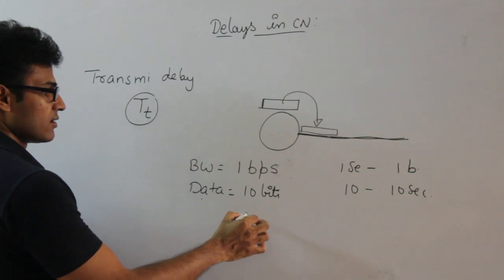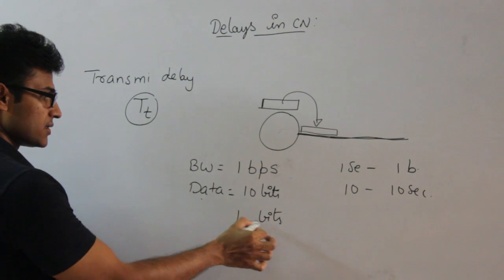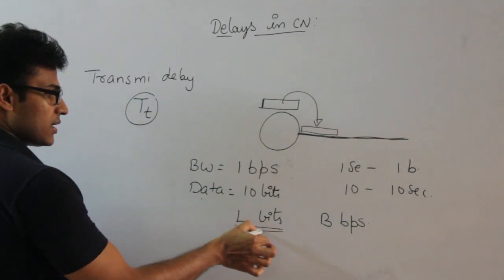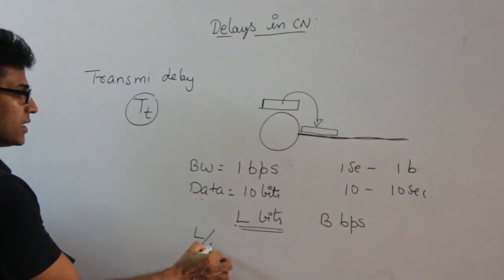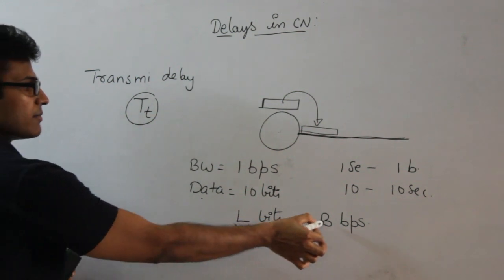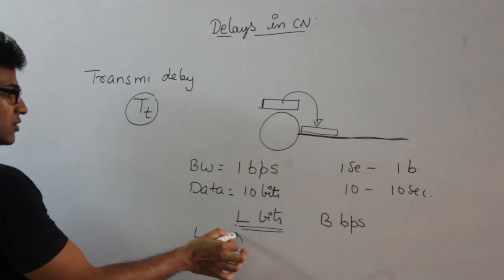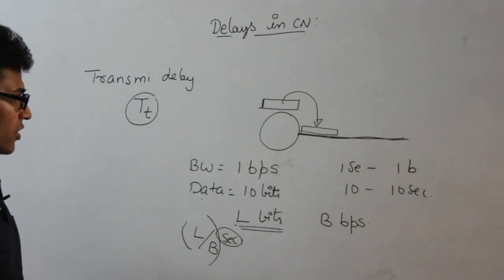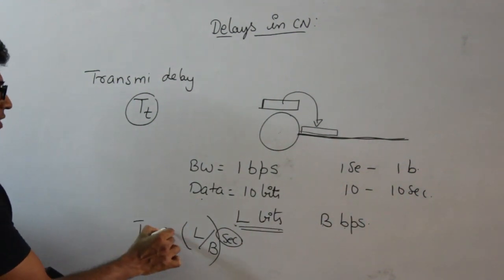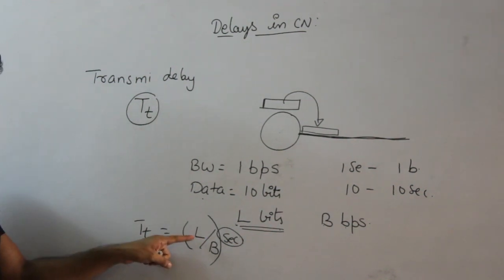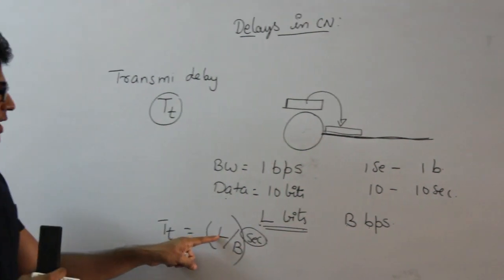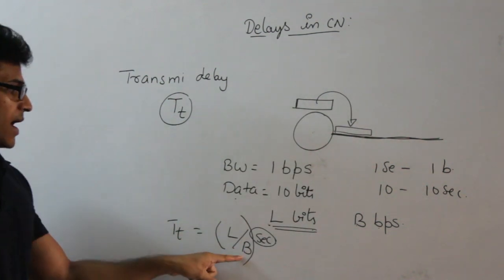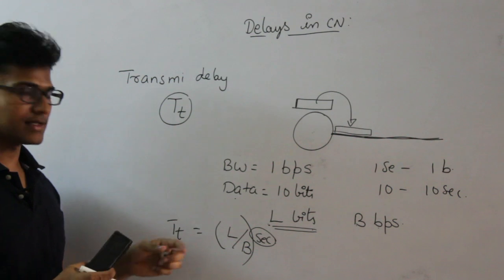If the size of the data packet is L bits and the bandwidth is B bits per second, then the transmission delay is L divided by B seconds. Dividing bits by bits-per-second gives seconds, so even from the units you can verify the formula. Transmission delay depends on two things: the length of the packet and the bandwidth. A bigger packet means more delay; higher bandwidth means less delay.